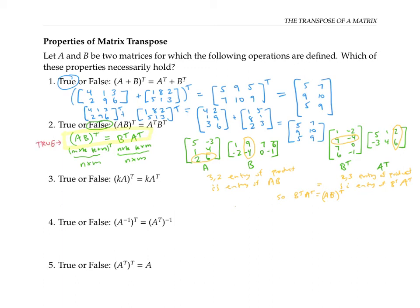What about the next statement: the transpose of a scalar k times A is the same as k times A transpose? It's not too hard to convince yourself this is true. If we multiply five by the entries of a matrix and then switch the roles of the rows and columns, that's the same thing as switching the roles of the rows and columns first and then multiplying by five.